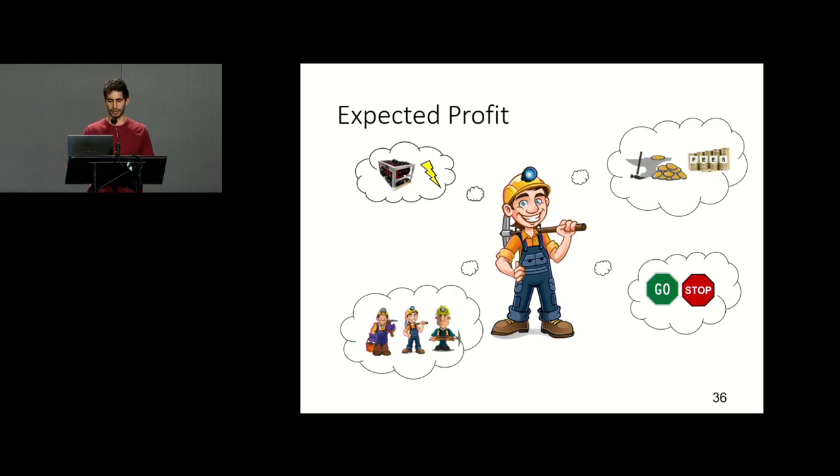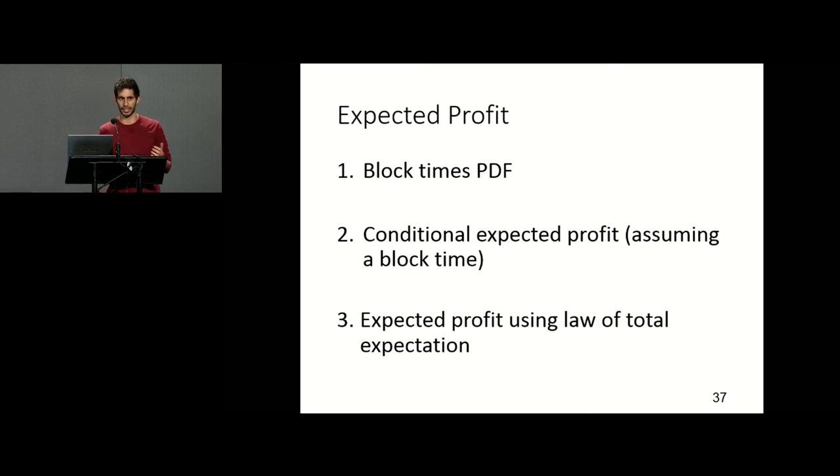So the way to derive this expected profit was basically composition of three steps. The first was to find the block creation probability distribution function. That part was a bit tricky. It was a composition of random variables of shifted exponentially distributed other random variables. The full details are in the paper. I'm not going to talk about that. The second part was to assume when we found the block, and then derive the conditionally expected profit of that miner. This is a more straightforward thing. And the third step was to combine the two first steps using the law of total expectation, sometimes called the smoothing theorem, to get the expected profit of a miner.